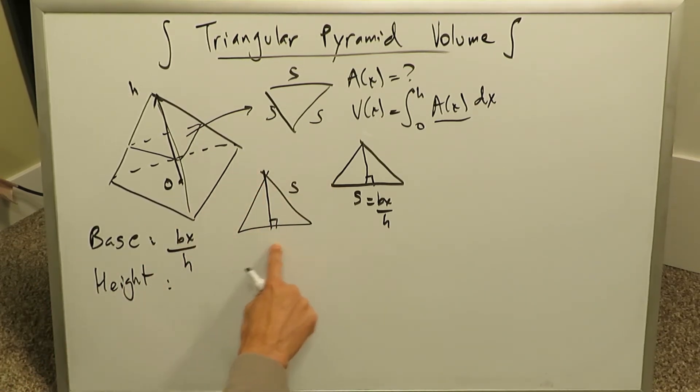If this is equal to BX over H, which is S, then S over 2 is BX over 2H. I'm doing half of this right here, and this right here must be BX over H. And this right here, the height, I'm going to call that Y.